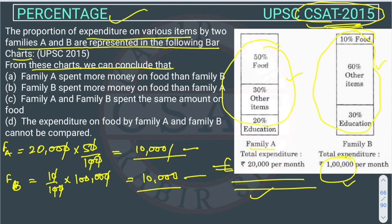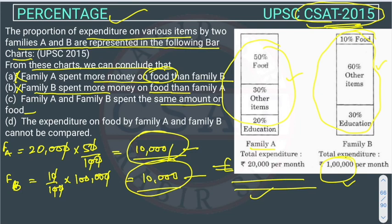Now, 'Family A spent more money on food than family B' — this is not correct. 'Family B spent more money on food than family A' — this is also wrong. 'Family A and B spent the same amount of money on food' — we have calculated both are spending 10,000 rupees, so option C is correct. Option D says the expenditure cannot be compared, but it can be compared because exact figures are available, so option D is also wrong. The correct answer is option C.